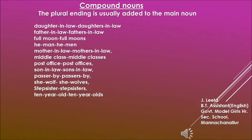Here is a new variety of words — compound nouns. They are two or more small words used as one word, like mother-in-law, daughter-in-law, full moon, he-man, middle class, post office and so on. Remember, when you make them into plural, add S only to the main word. So post office becomes post offices, son-in-law becomes sons-in-law, she-wolf becomes she-wolves, and daughter-in-law becomes daughters-in-law when they become plural.